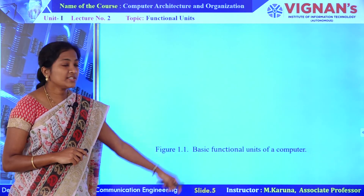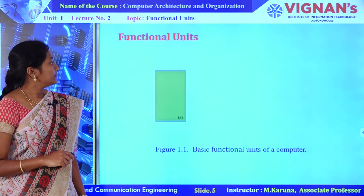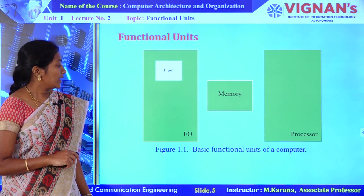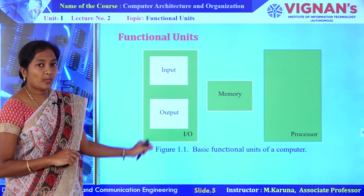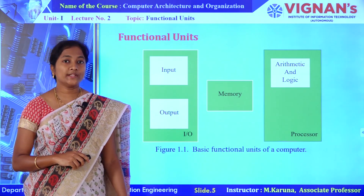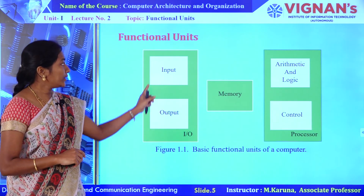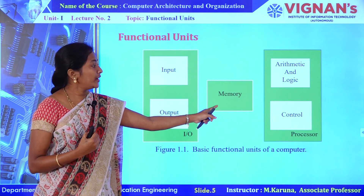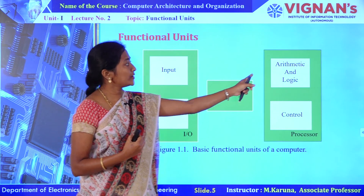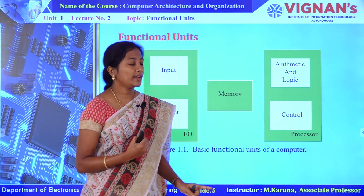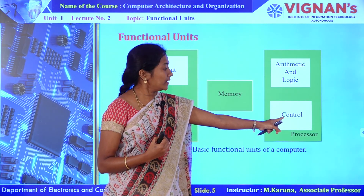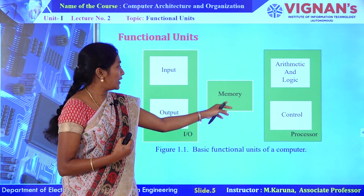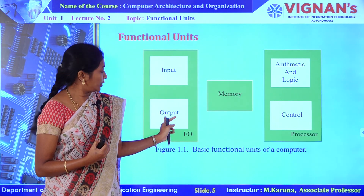Let us see the basic functional units of computer diagram. The main basic functional units are IO units, memory, and processor. The IO unit contains an input device and output device, and the processor consists of an arithmetic and logic unit and a control unit. The input device accepts information from the outside world, which is stored in memory for future reference or processed directly by the arithmetic and logic unit under the control signals generated by the control unit. After processing, the results will be transferred to memory for storage and also transferred to the outside world through the output unit.